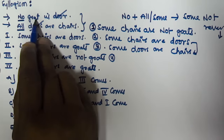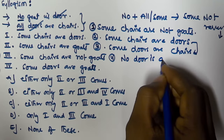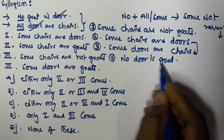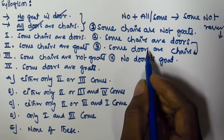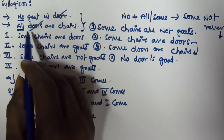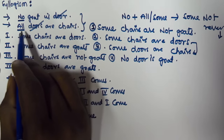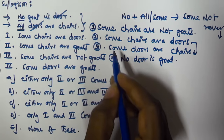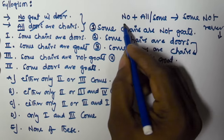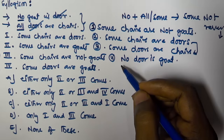From the first statement, no goat is door, we can interchange subject and predicate to get: no door is goat. The rules are: with 'no' you can interchange subject and predicate directly; with 'some' you can also interchange; but with 'all,' interchanging requires replacing 'all' with 'some.' Using No + All gives Some Not Reversed for the first derivation.